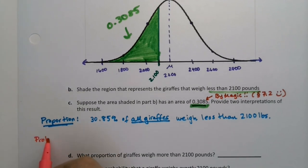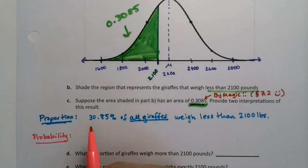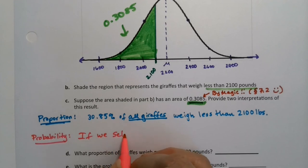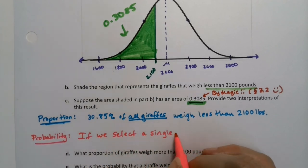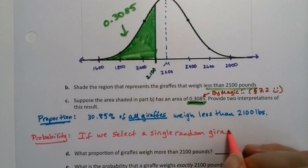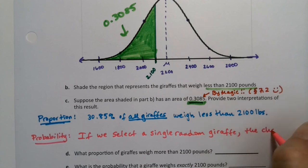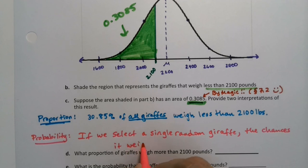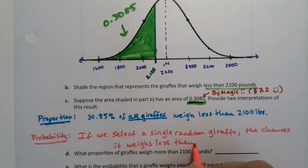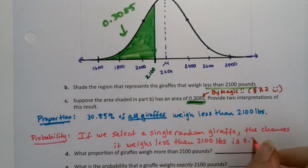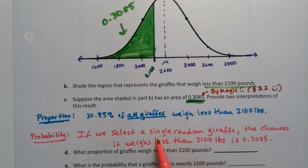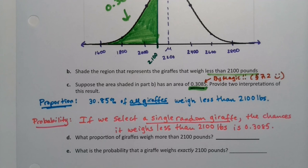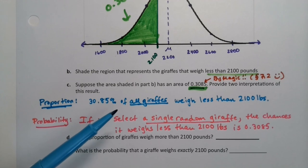The other way to interpret it is the probability way. That's saying: if you select a single random giraffe, the chances it weighs less than 2,100 pounds is 0.3085. It's talking about a single random giraffe rather than the percentage of the whole. Now, if you're thinking they're kind of the same thing — yes, exactly. They are two interpretations of the same number, just slightly different ways of thinking about it. One is about the proportion of the whole group; the other is about a single random giraffe.